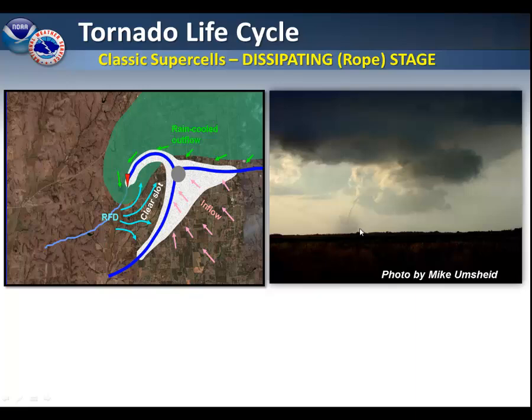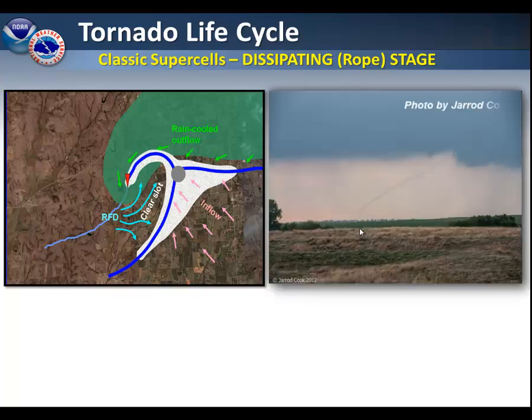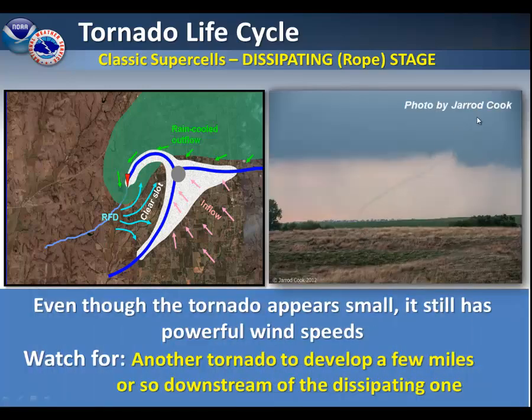Toward the end of its life cycle is what we call the rope stage of a tornado. You can see how skinny this is. However, it does still have powerful wind speeds.